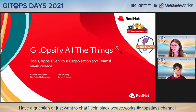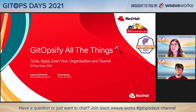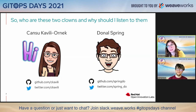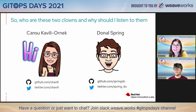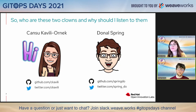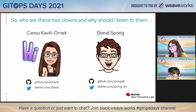Welcome, everyone. Today we're going to talk about GitOpsify all the things — not just the tools, not just apps, but also your organization. My name is Chanzu. I'm at Red Hat working in Site Reliability Engineering in the Open Innovation Labs EMEA team. These are our handles if you need to reach out to us. My name is Donald Spring, and I'm an architect working in the Red Hat Open Innovation Labs team as well.